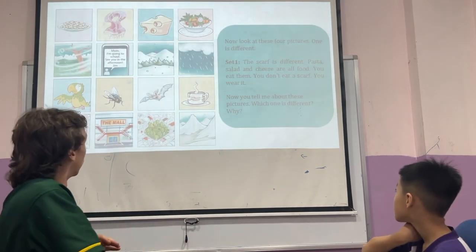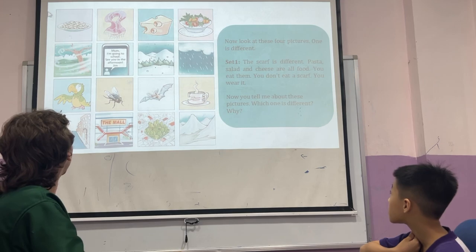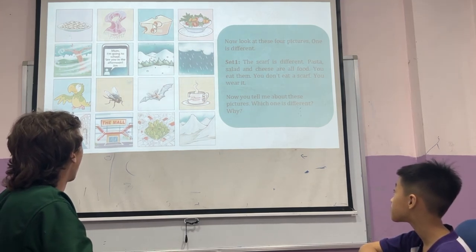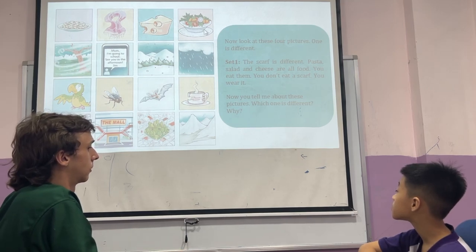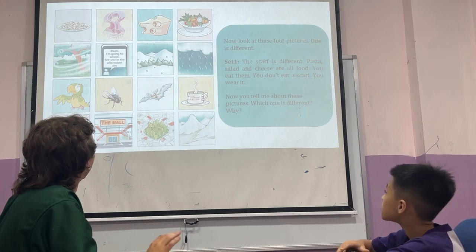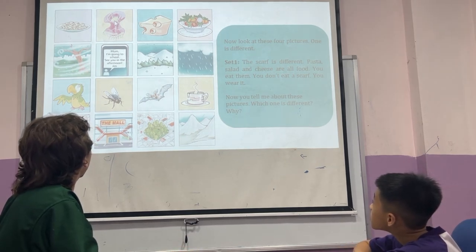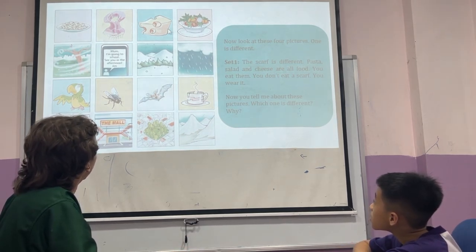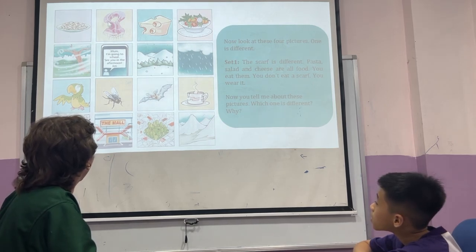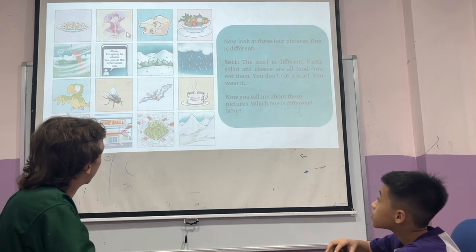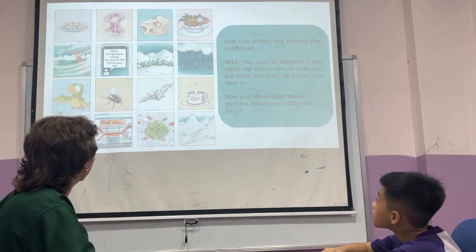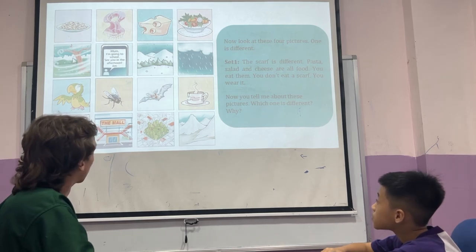Okay, so let's take a look at our first line here. We have four pictures. Which one is the odd one out? I'll take the first one over here. In our first set of little pictures, the odd one out is picture number two, because you cannot eat a scarf, but you can eat pasta and cheese and salad.